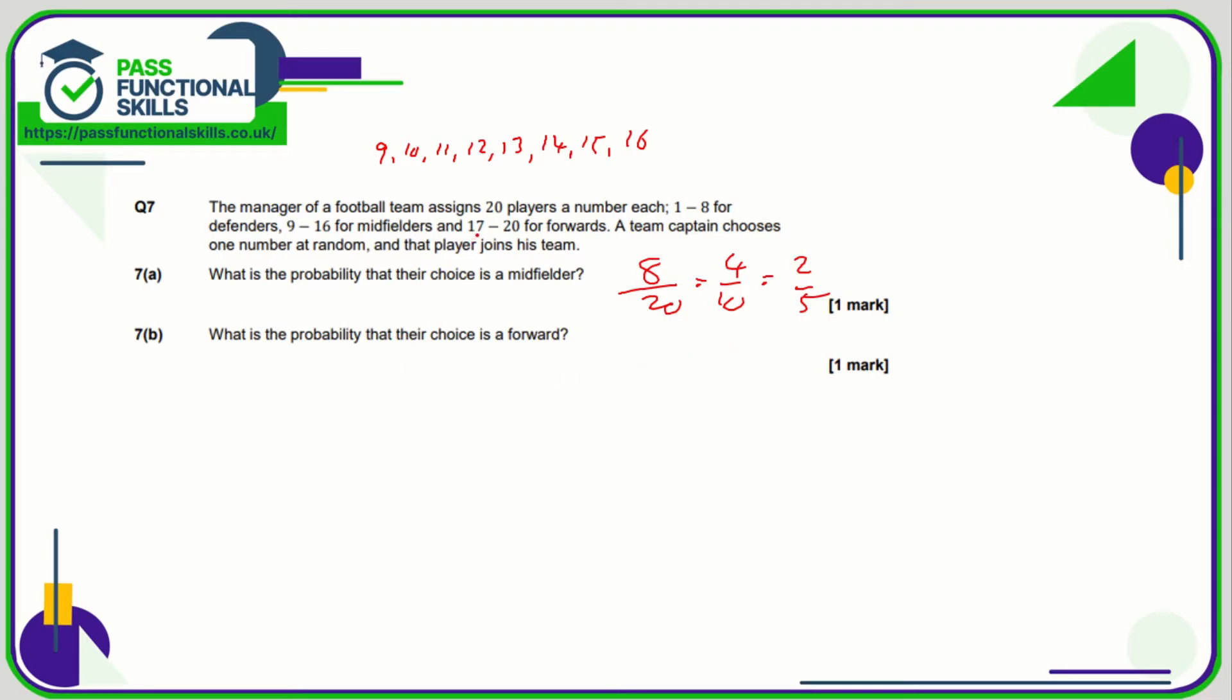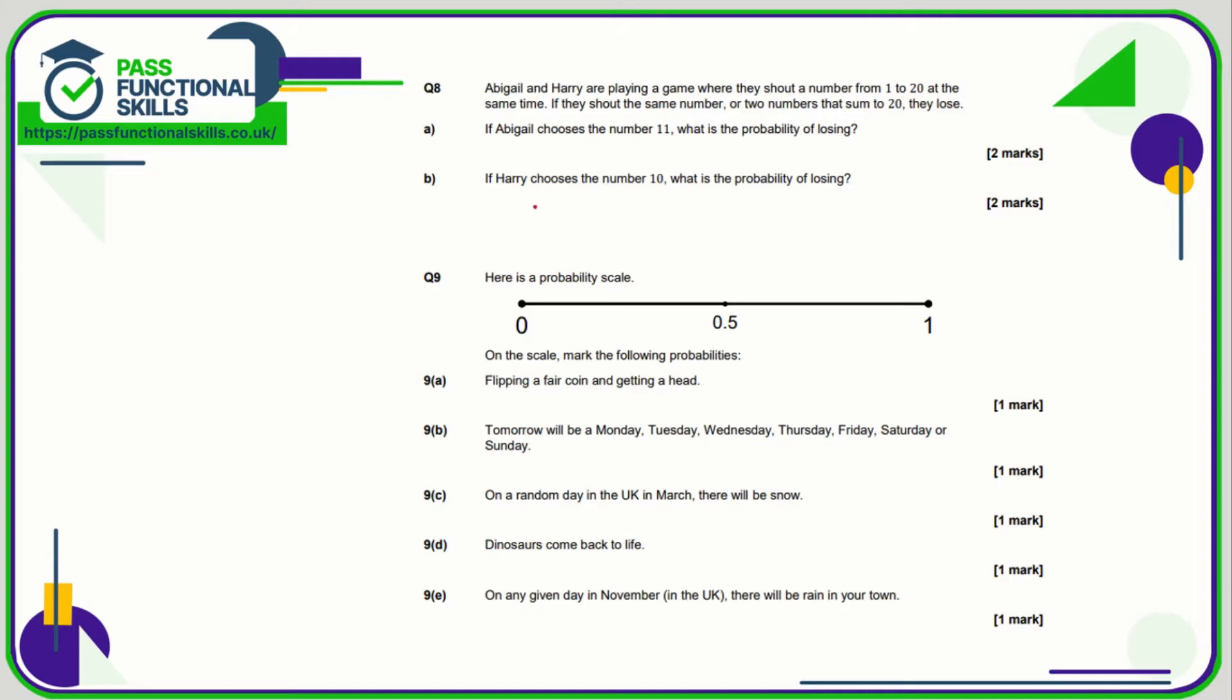And the probability of a forward, so that's 17, 18, 19, and 20, which is 4 out of 20, which is the same as 2 out of 10 or 1 out of 5. Again, all these answers are perfectly acceptable.